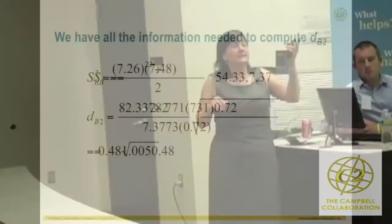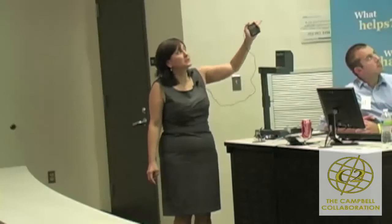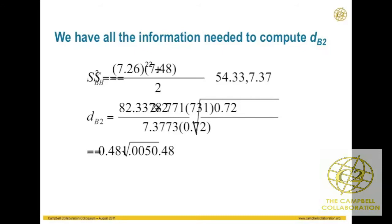It turns out I have all the information I need to compute delta-B. I know that I can calculate delta-B and then get to the one I want. Assuming equal clusters — 10 schools in each group — I take my pooled between-group variance as basically an average of the two variances since I have equal clusters. Then I compute S-sub-B and calculate my overall treatment minus control difference divided by S-sub-B.